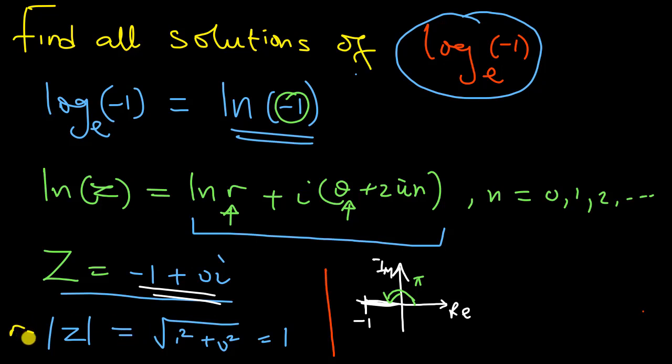So I already know what r is. I know what r is, that's 1, and I also know what theta is, which is the argument of the complex number. It's π. So I can now write the final solution.